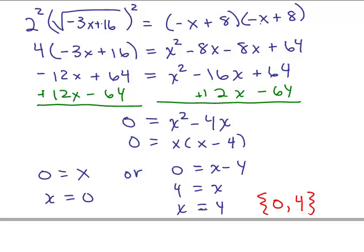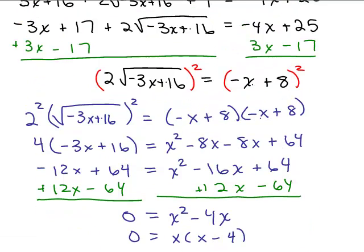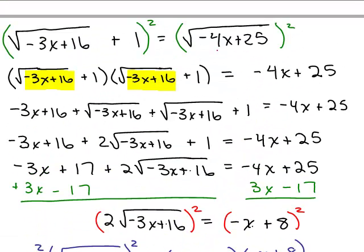The only way to make sure that's correct is by plugging 0 and then 4 into the original equation and checking both sides. I'm going to check both now. I'll also make one more video solving the exact same problem by isolating the other square root — subtracting 1 from both sides first — which is actually slightly easier. That will be part 8.